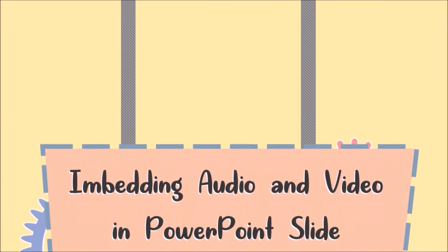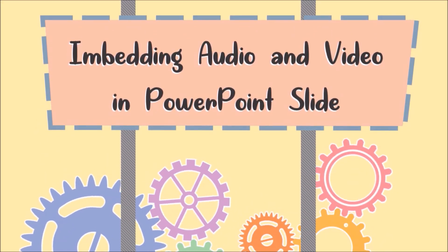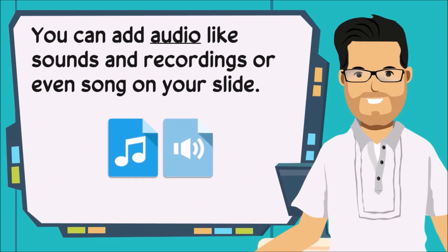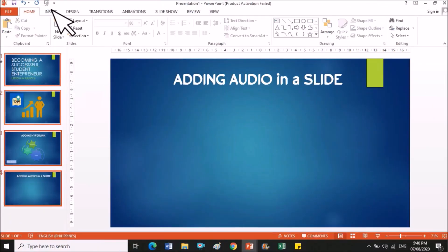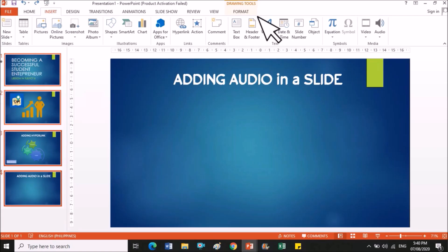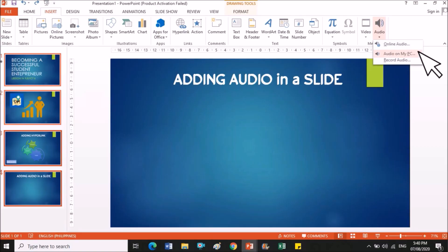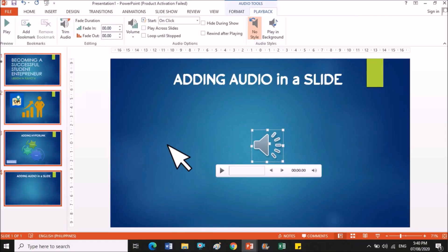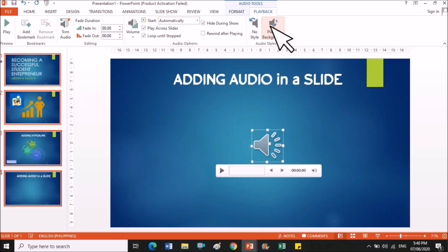Now let us learn how to embed audio or video in your PowerPoint. You can add audio like sounds, recordings, or even songs to your slide. Just go to the Insert tab and click the Audio button. Choose Audio on My PC if the sound you want to add is on your computer, then choose the audio file. An audio icon will show on your slide and you can play it during your presentation. You can also set it as background music by clicking Play in Background.